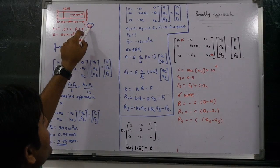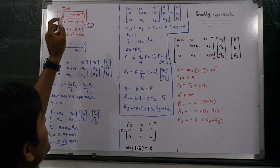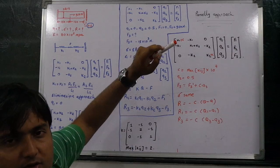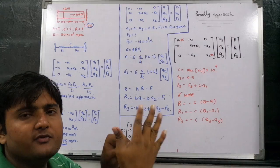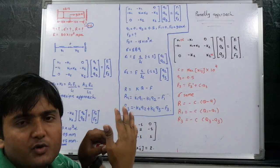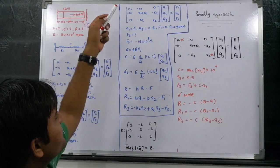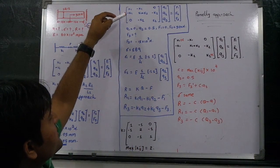But actually, the gap is of 0.5 mm, it means after 0.5 mm elongation in the x direction, the fixed support will oppose the reaction on the body. So we need to do further calculation.